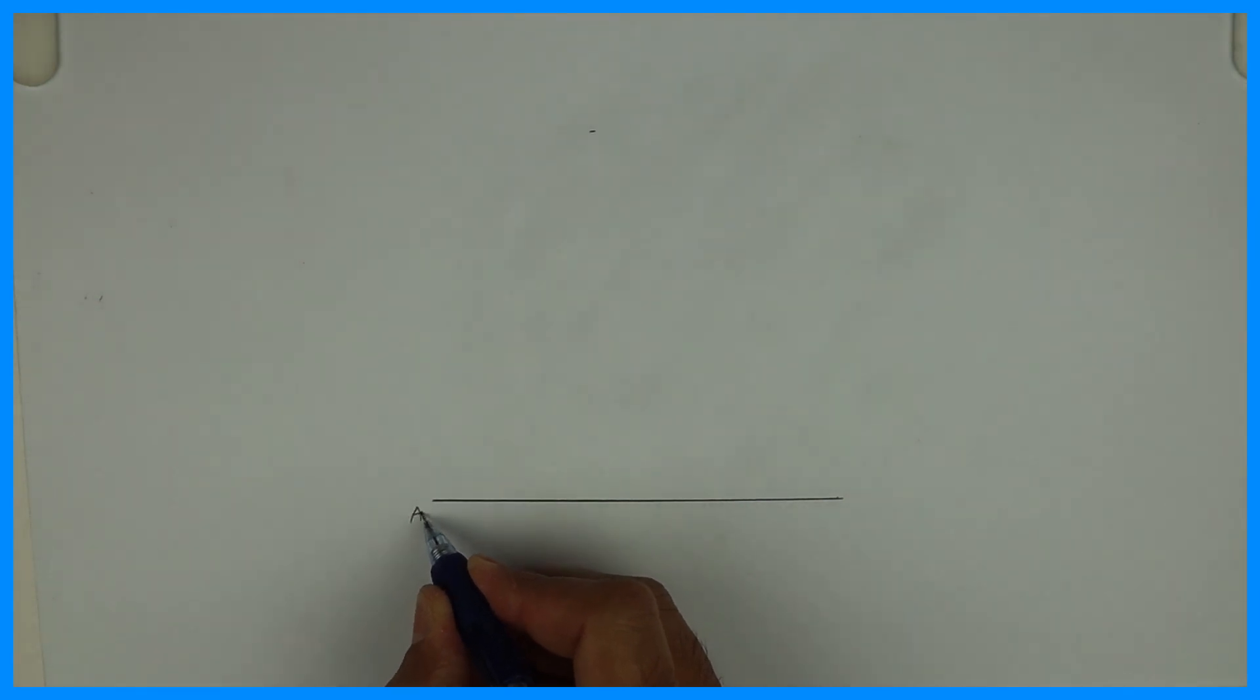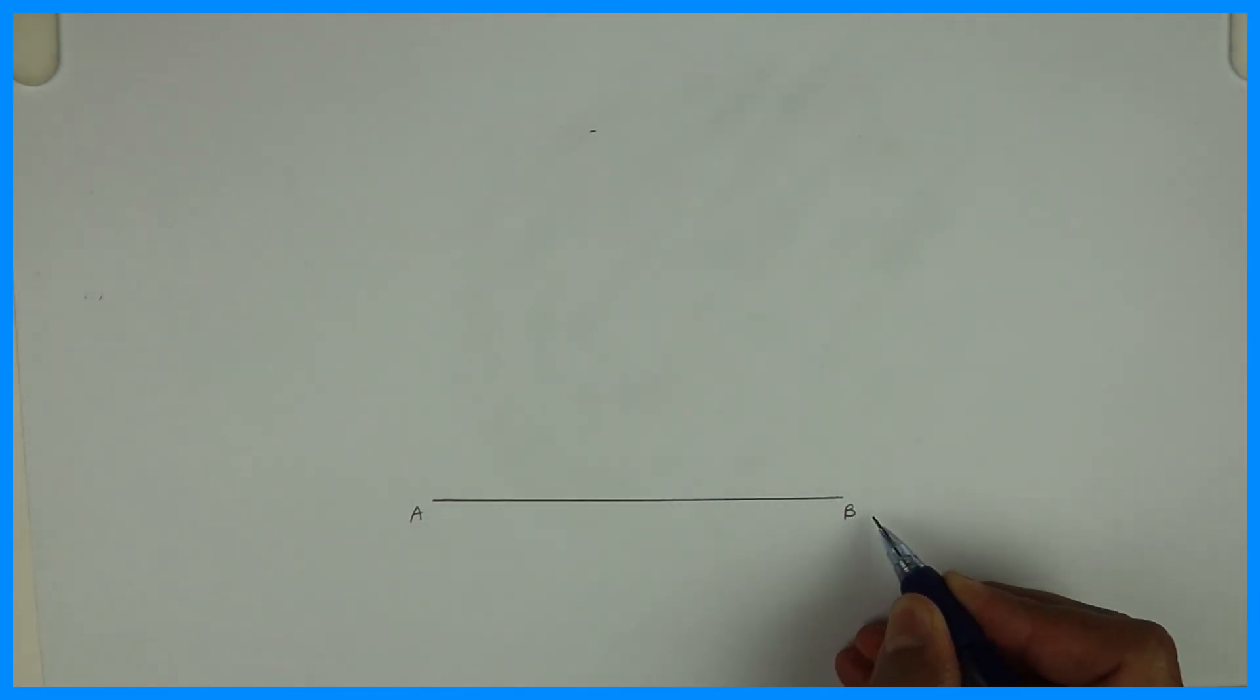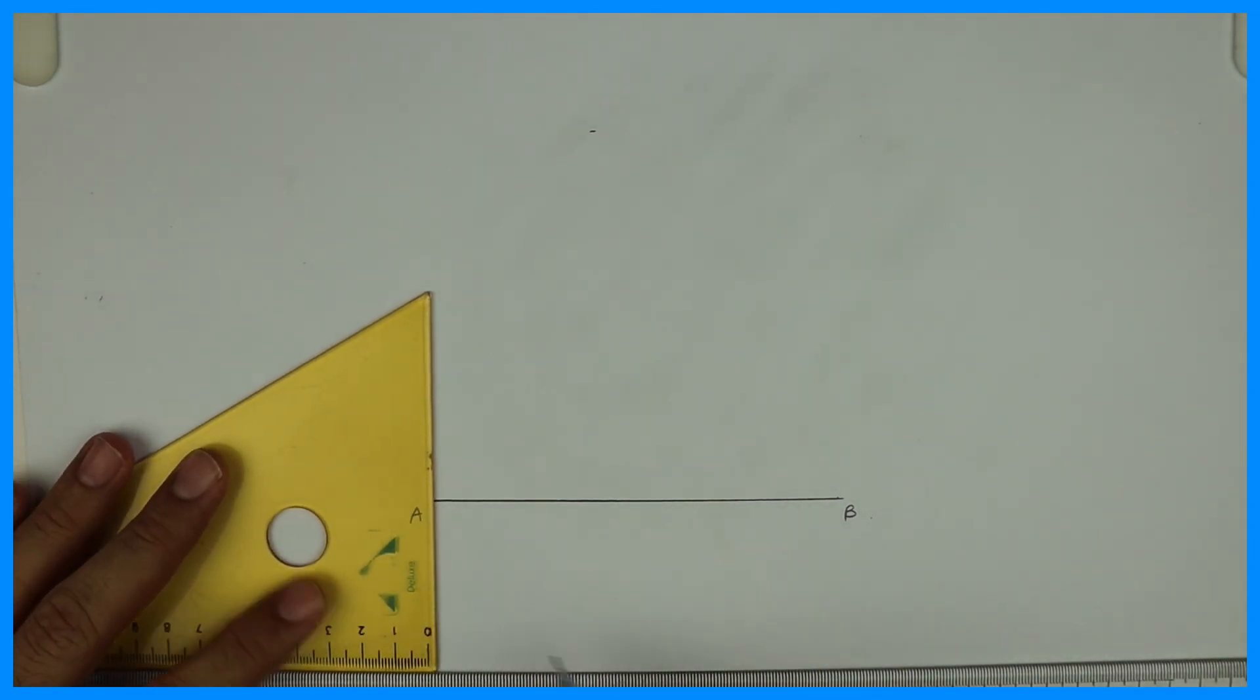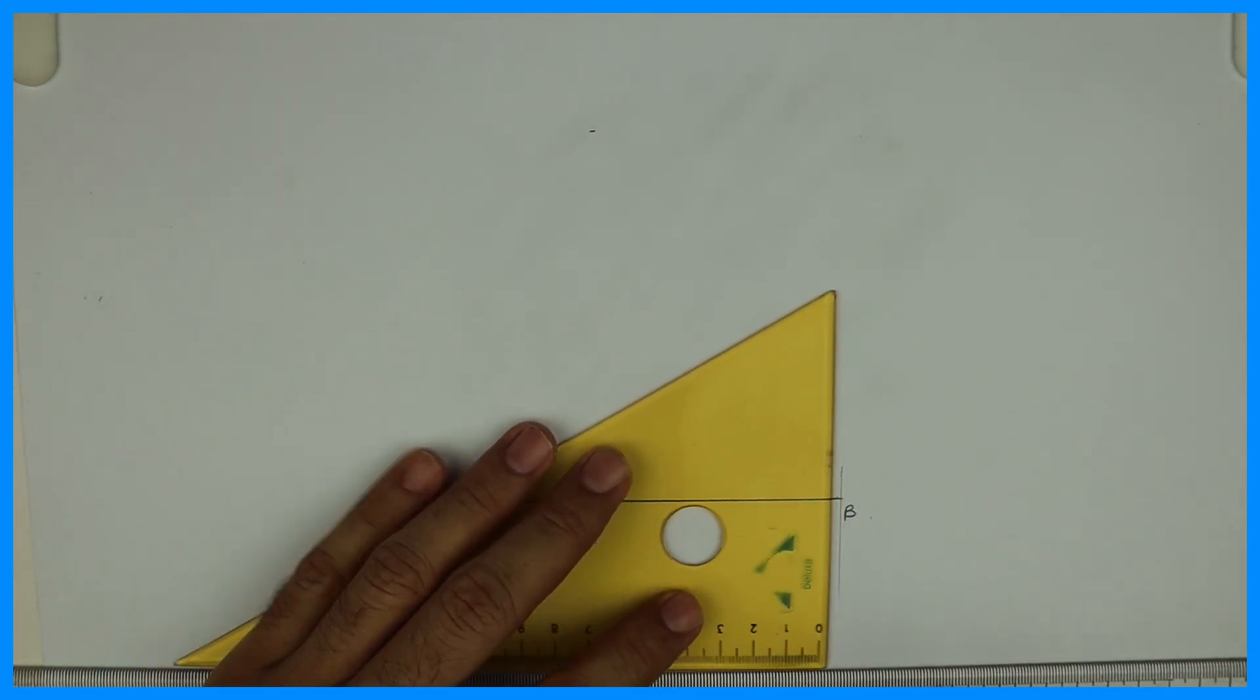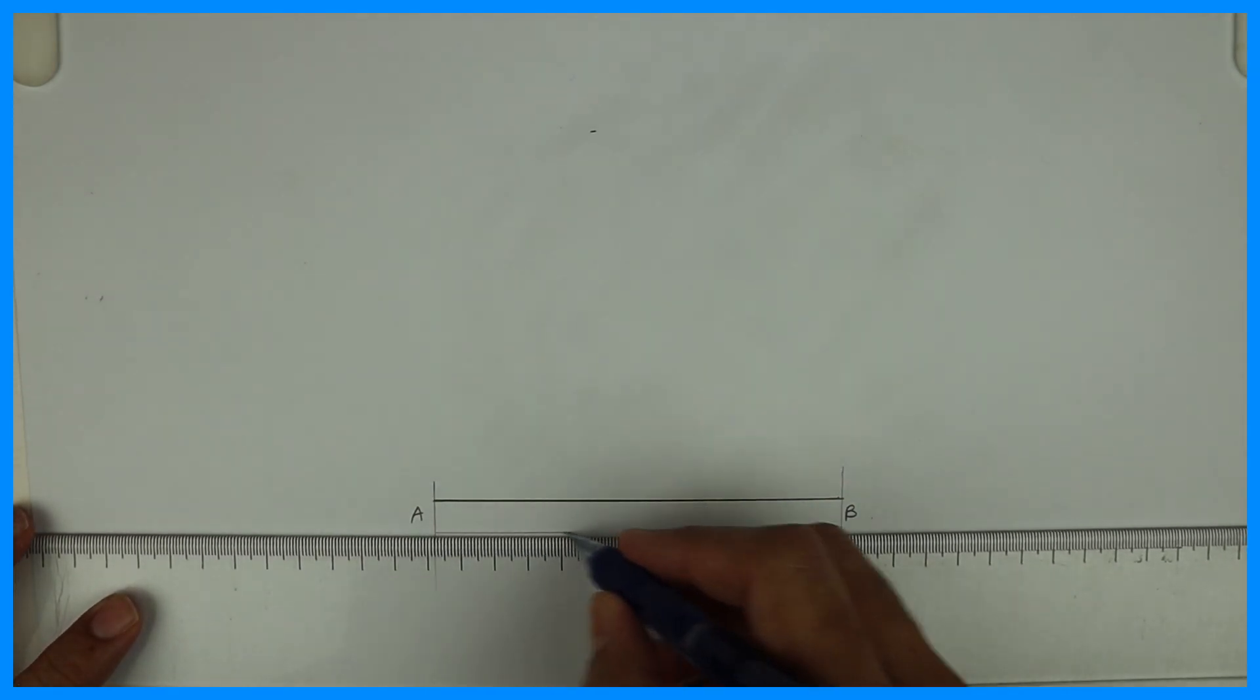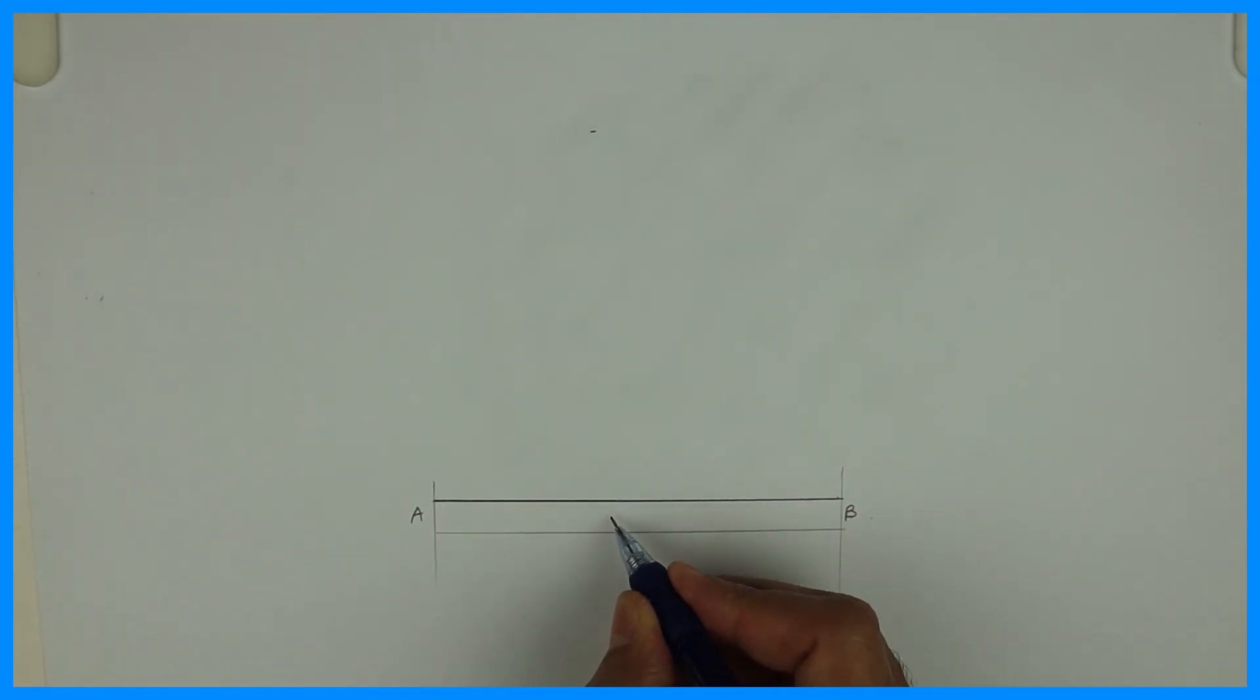So first we will draw line AB which is 120mm long. This is 120mm.